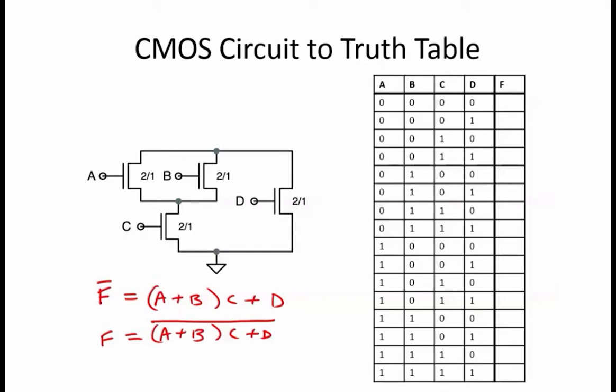For this function F, for example, if A equals 0, B equals 0, C equals 0, and D equals 0, then A or B anded with C equals 0, that OR'd with D equals 0, and finally the entire thing is negated, so F equals 1.